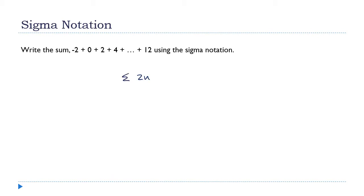I need even numbers. To express an even integer, I use 2n. So I'll write a sum with formula 2n. Where does it start? I need it to start at -2, so what does n have to be? That's n = -1. And where does it end? I need 2n = 12, so n = 6. You can verify: when n = -1 this is -2; n = 0 gives 0; n = 1 gives 2, and so on — it gives us all the numbers in our series.